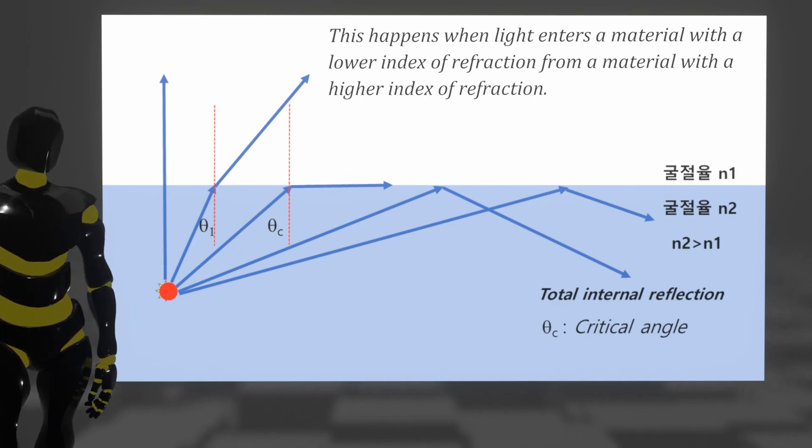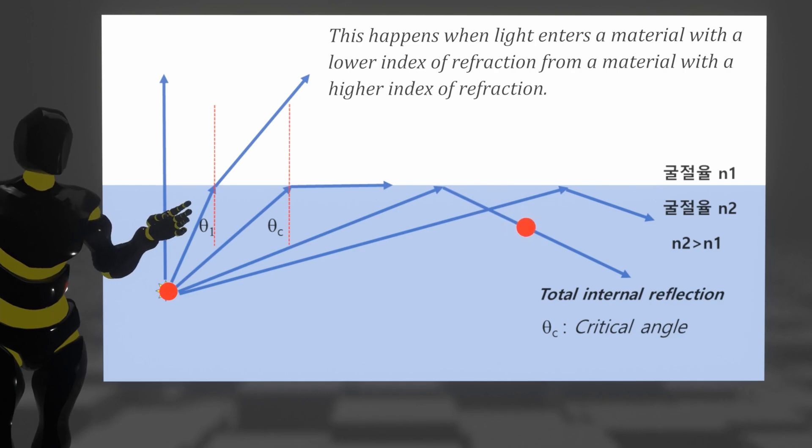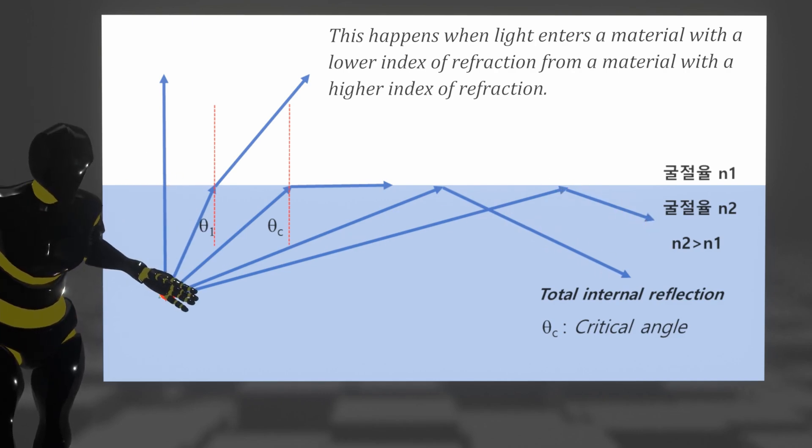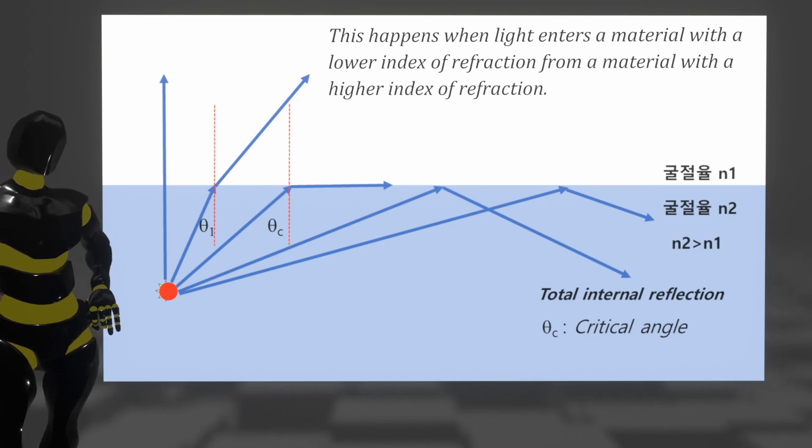The refractive index of the organic layer where light is generated inside the OLED device is about 1.7, and air is 1. This is because when light generated by a material with a high refractive index enters the layer of air with a low refractive index, only part of it escapes.